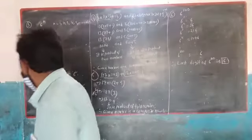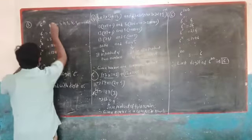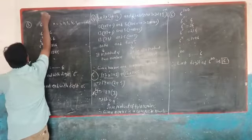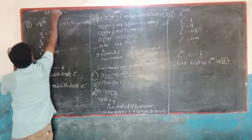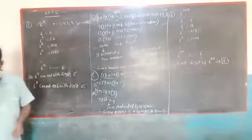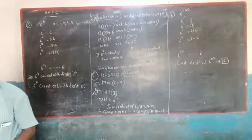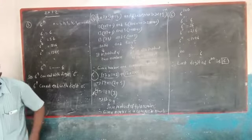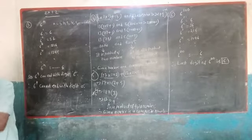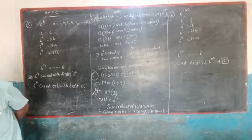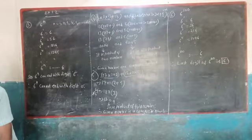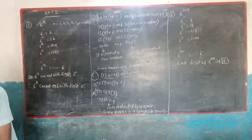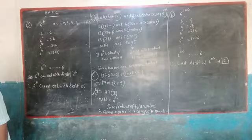Okay, it's all done. Now today we are going to start problems in exercise 1.2. What is the third one? Check whether 6^N can end with the digit 0 for any natural number N.